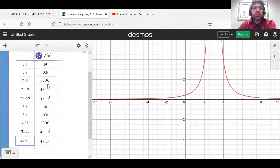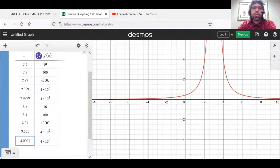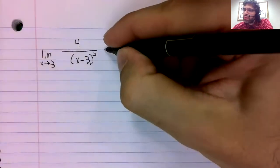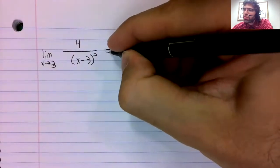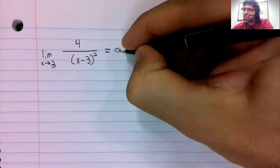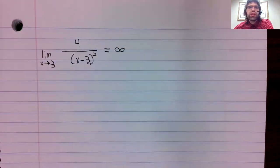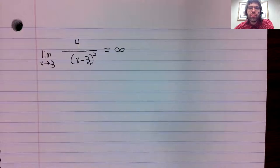So clearly, this limit doesn't exist. f of x is not approaching a finite number. And we have a way of writing that: we say that the limit is equal to infinity.